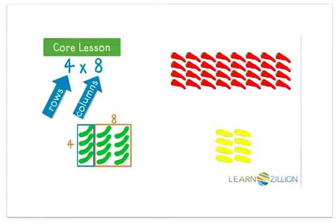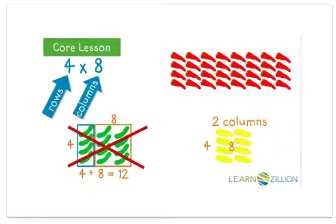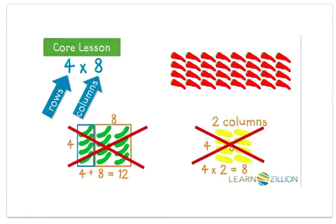The cucumber array shows four plus eight, or twelve cucumbers total — it does not match four times eight. The corn array also has four rows, but there are only two columns, with eight corn total. The corn shows four times two: four rows with two in each row. It does not match four times eight.